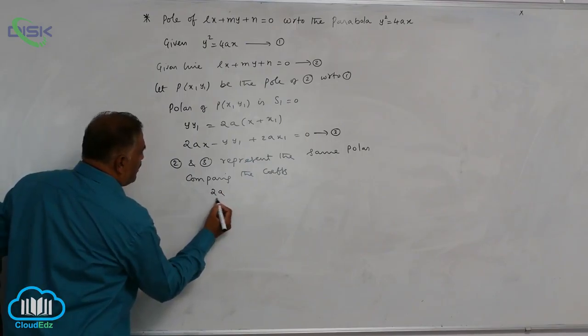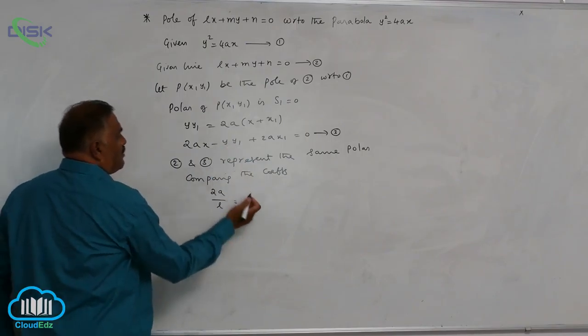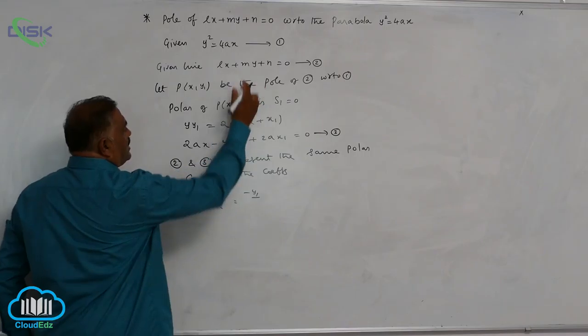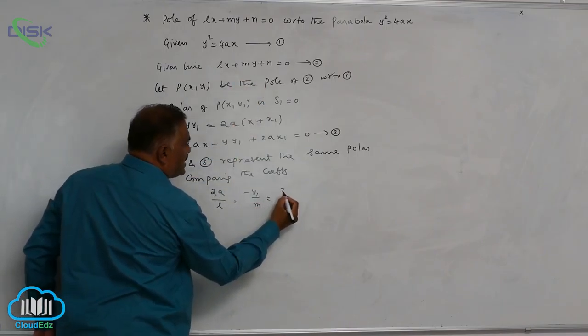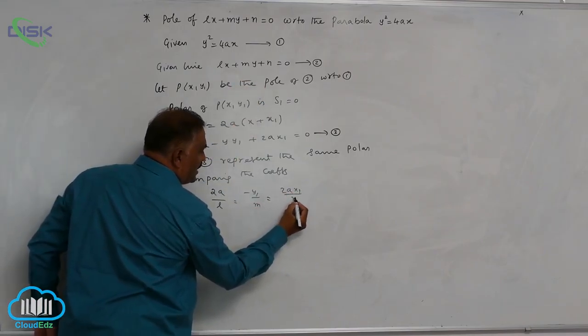This is 2A by L is equal to minus y1 by M is equal to 2Ax1 divided by N.